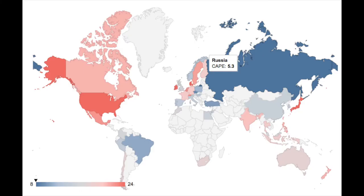In this picture we can see CAPE ratios across the world: Russia is the cheapest, China very cheap, Brazil cheap, Italy is cheap. The US, the Netherlands, and parts of Europe are very, very expensive according to the CAPE ratio.